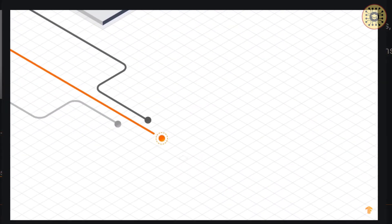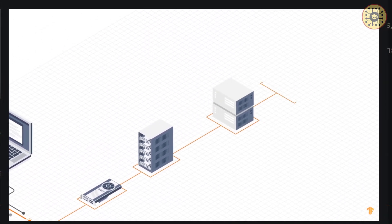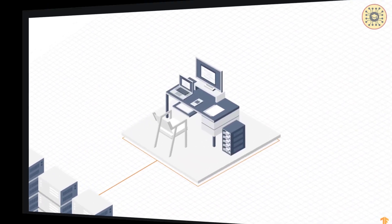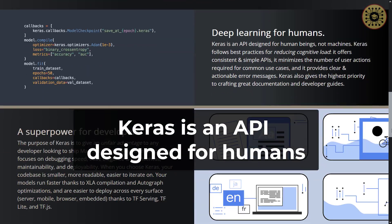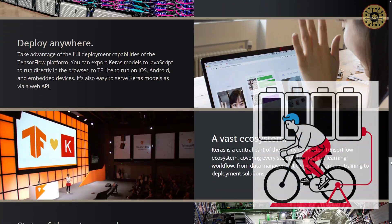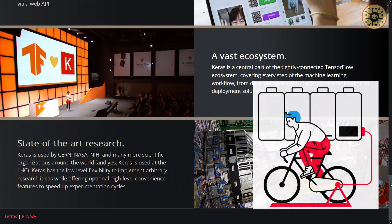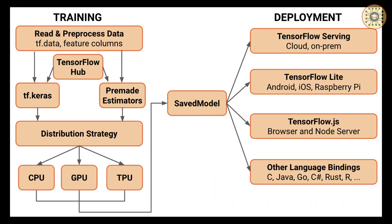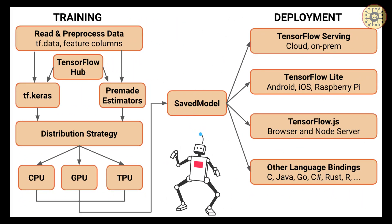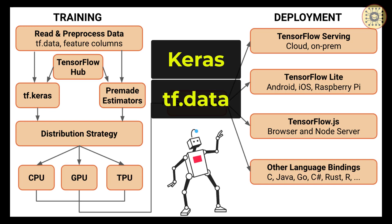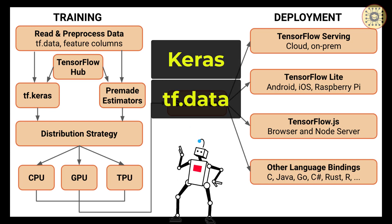TensorFlow has many APIs that make your projects easier. The most important of these is undoubtedly Keras. Keras is an API designed for humans that allows you to easily build deep learning models. Another important API for loading data is tf.data. Keras and tf.data are enough for implementing your deep learning projects.